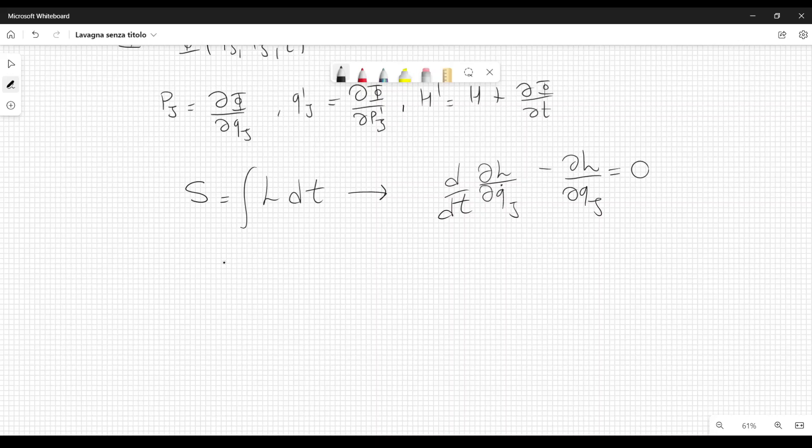From this, it is also possible to derive a function H, which is the Hamiltonian of the system. It is equal to dL over dq dot j, q dot j minus L, and here we are summing over j. This function here is also defined as momentum, p j.